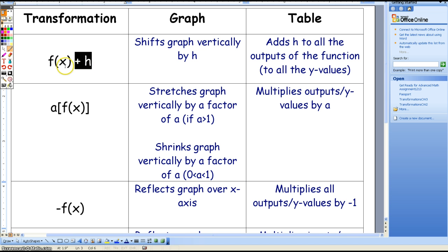because they're all happening outside of the f(x), right? This is like f(x) + h, it's like y + h. You're adding h to y. This is a times f(x). a is outside of f(x), so it's multiplying your y-values. Same here with this negative—it's outside of the f(x), so it's going to affect your y-values.